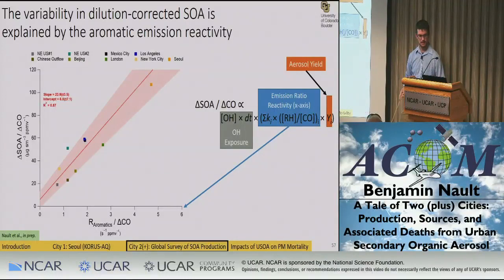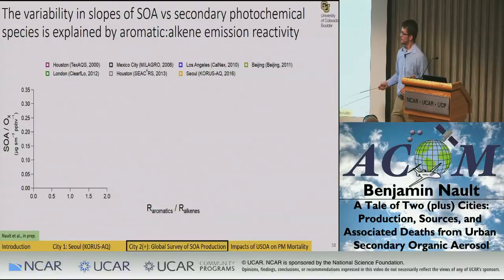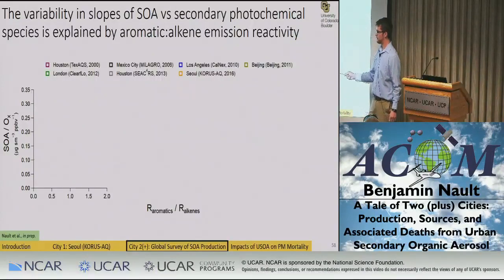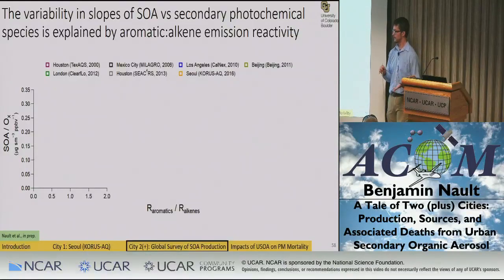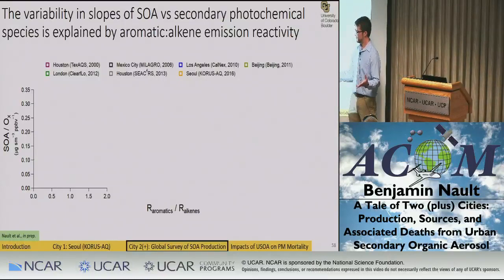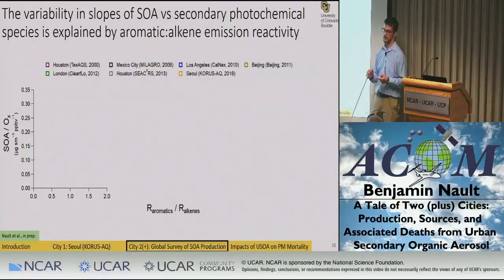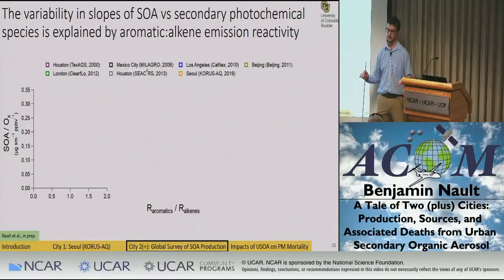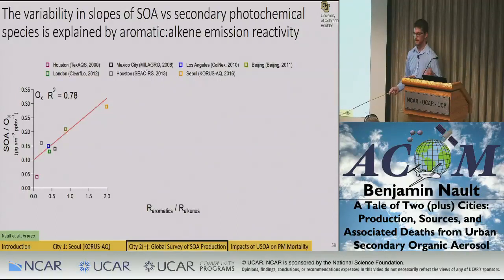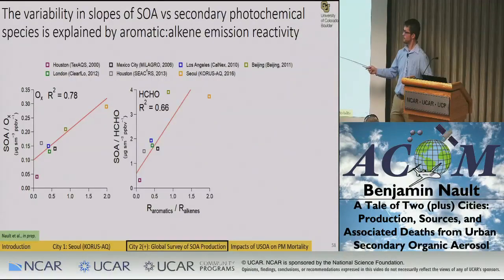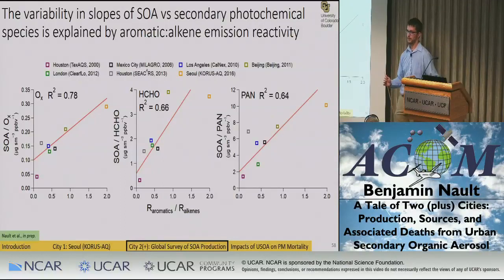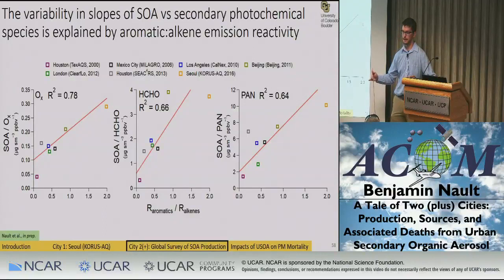I also looked at whether we could do this for slopes of SOA versus ozone across cities, plotting the slope versus the ratio of aromatic emission ratio reactivity to alkene emission ratio reactivity. Aromatics are a representative SOA precursor, while alkenes — mainly ethylene and propylene — are significant precursors of ozone, formaldehyde, and PAN production. Plotting it this way gives a very robust correlation for ozone, formaldehyde, and PAN slopes. This all points to the emissions and their reaction rates driving the variability in SOA production across cities.